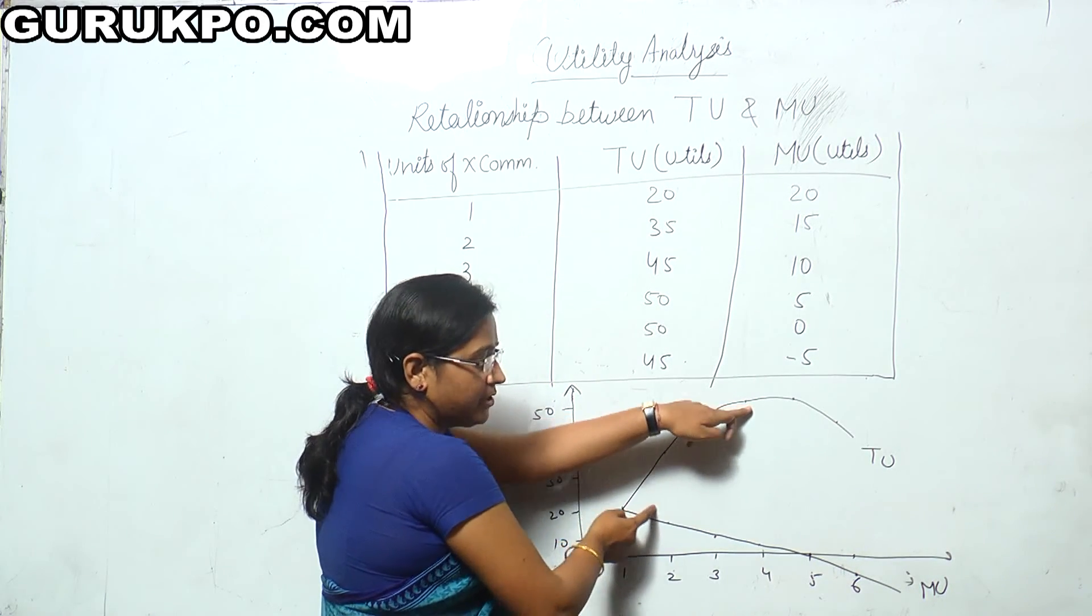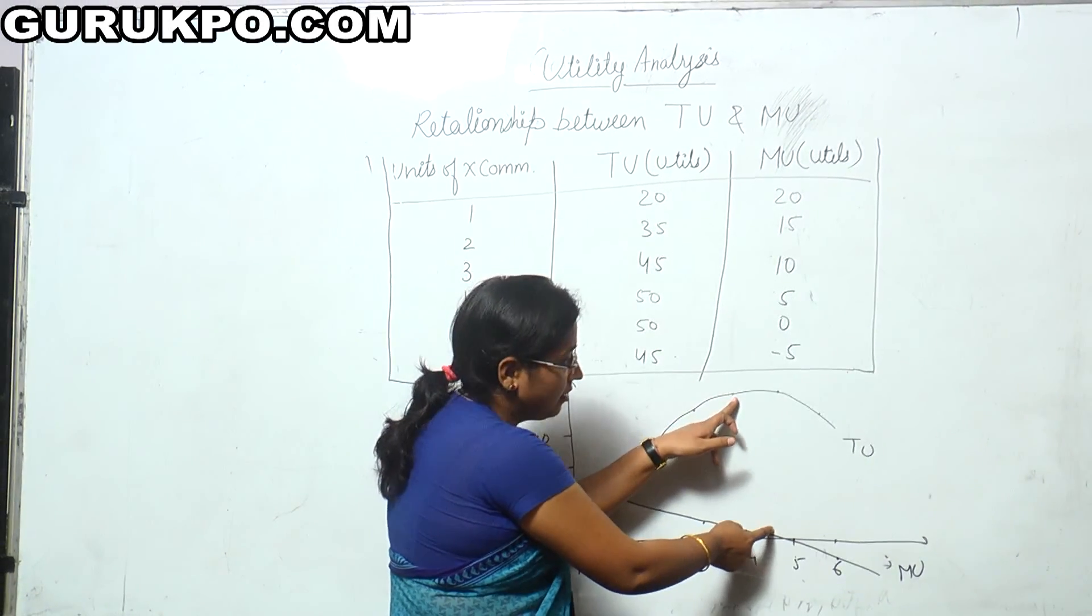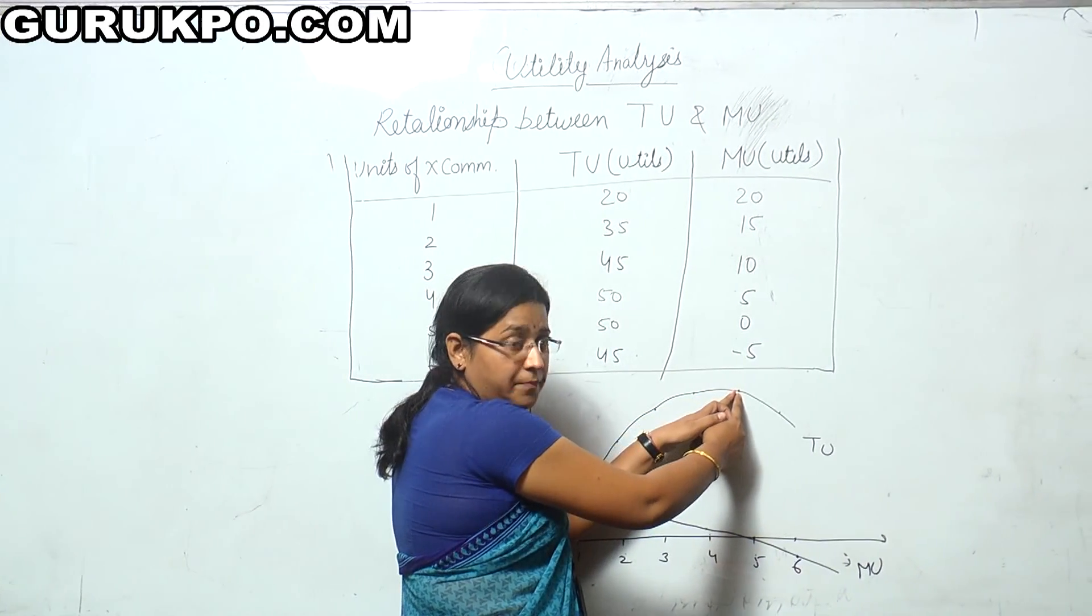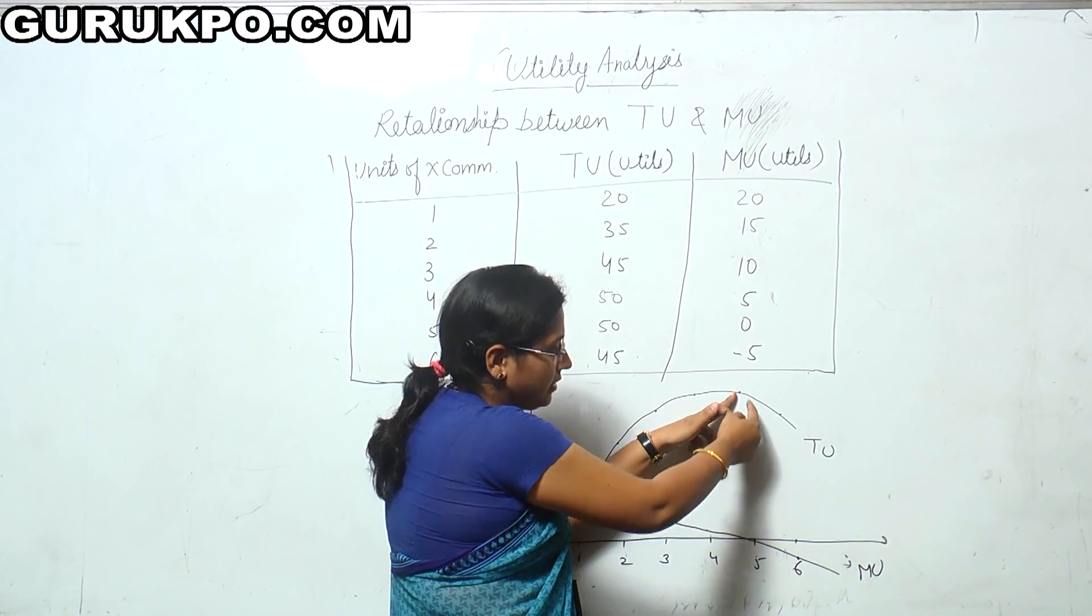And simultaneously, marginal utility is going on decreasing. Where TU is maximum and going to start diminishing, the MU is zero.